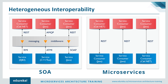Now we have heterogeneous interoperability. Any software application need not be developed on the same programming language — smaller applications within your main application could be written in Java, C++, C#, Python, or anything. When written in different programming languages, it's tough for them to interact with one another. In SOA, there is something called messaging middleware, which acts as the communication point between applications in different languages. So all communications between applications go through this one particular messaging middleware.